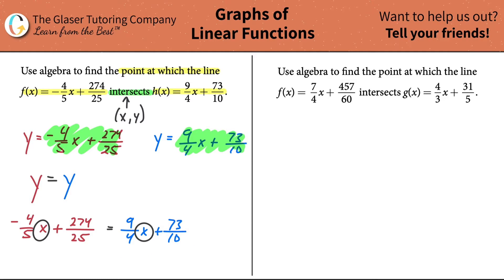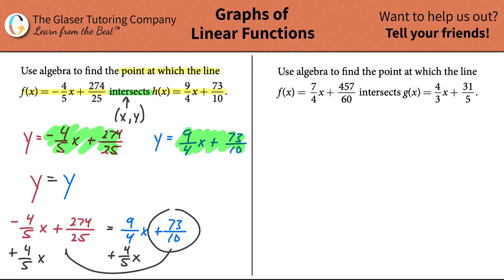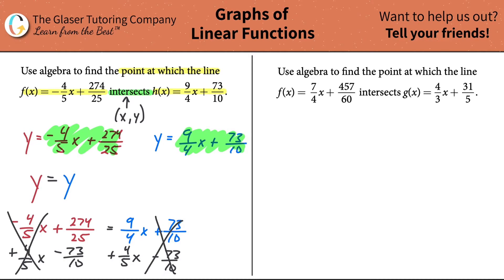Solving this for x gives us the x value common to both lines. We combine like terms and get all variables on one side. Add 4/5 to both sides to move the x term, and subtract 73/10 from both sides to move the constant. The 73/10 cancels on the right and the negative 4/5 x cancels on the left.